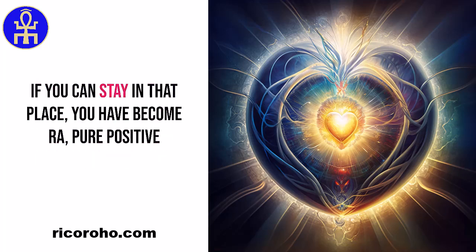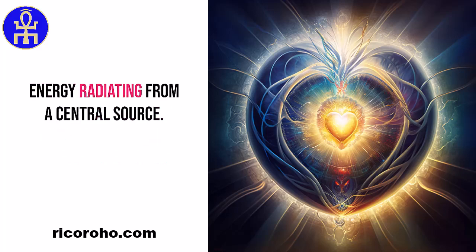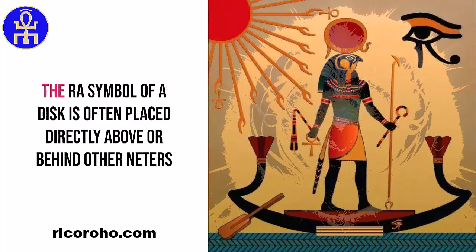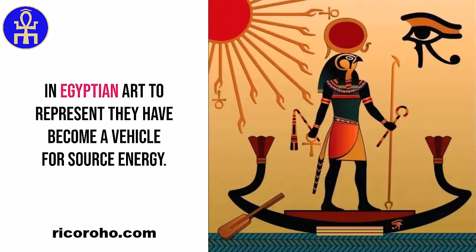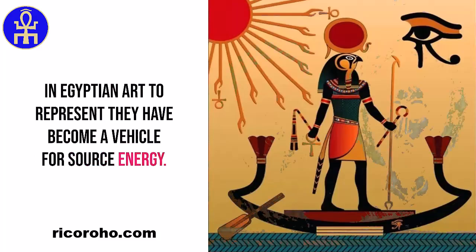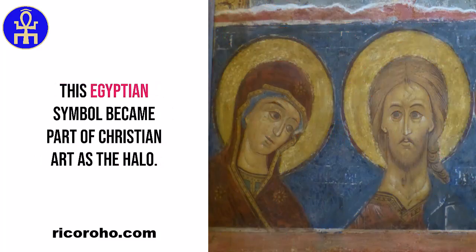If you can stay in that place, you have become Ra — pure positive energy radiating from a central source. The Ra symbol of a disc is often placed directly above or behind other netters in Egyptian art to represent they have become a vehicle for source energy. This Egyptian symbol became part of Christian art as the halo.